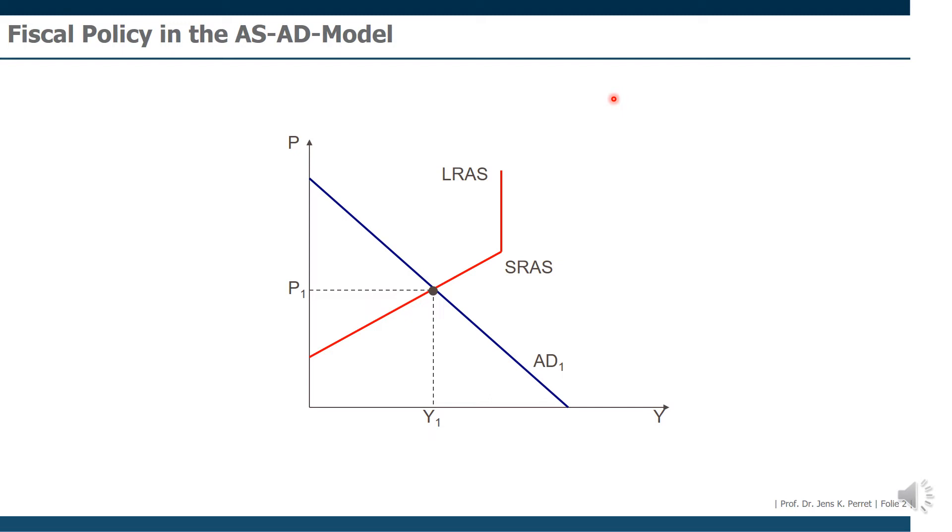If the government decreases taxes, independent of whether the taxes are decreased for companies or households, they have more money available for additional consumption or for additional investments. So in either case, any of the two parties will consume more. Independent of which type of fiscal policy happens, there will always be an increase in demand. So the AD curve will move to the right, and we get a new AD curve with a new equilibrium with a higher price level and a higher GDP.